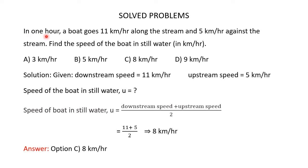In one hour, a boat goes 11 kmph along the stream and 5 kmph against the stream. Find the speed of the boat in still water in kmph. Here you are given 4 options. A boat goes 11 kmph along the stream — along the stream means the boat is going downstream, so the downstream speed is 11 kmph. And the boat goes 5 kmph against the stream, meaning it is going upstream.